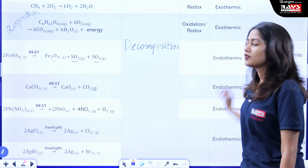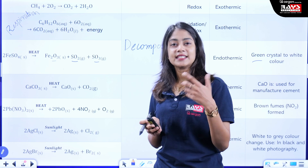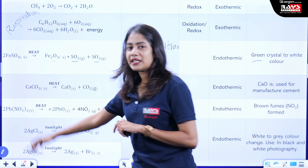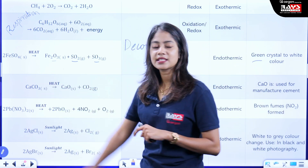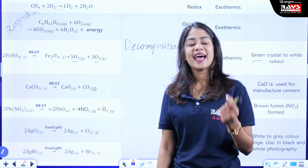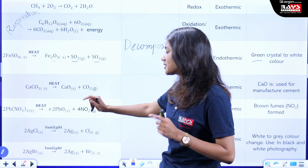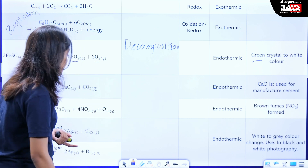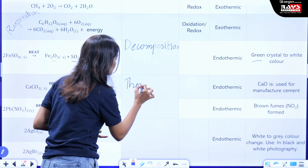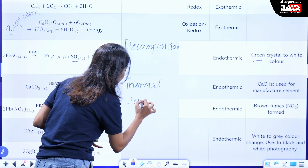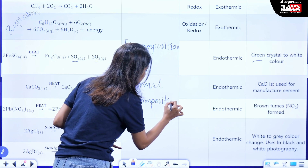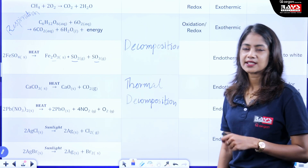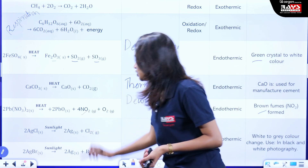Before moving on, note the changes of the crystals: when ferrous sulphate is heated, the crystals lose water molecules and there is a change in colour. Next, calcium carbonate decomposes in the presence of heat to form calcium oxide and carbon dioxide. Lead nitrate also decomposes in the presence of heat — these are thermal decomposition reactions. In this reaction, note the colour change in the fumes: brown fumes are formed, indicating the emission of NO₂.